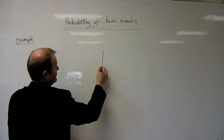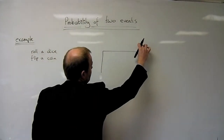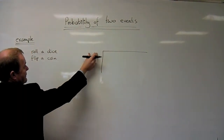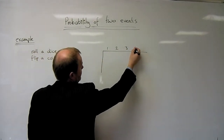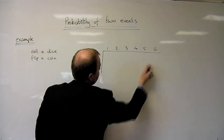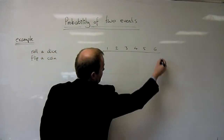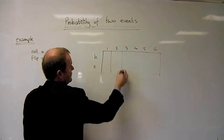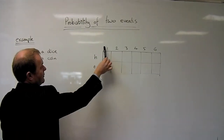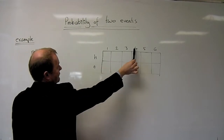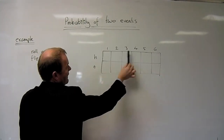With a grid, we put all the possible outcomes of one event along the top, and the possible outcomes of the other event down the side. Rolling a dice, I could roll a one, two, three, four, five, or six. Flipping a coin, I could get a head or a tail. By making the grid, you can see all the combinations: roll a one and flip a head, roll a one and flip a tail, roll a four and flip a head or a tail. There are twelve possible outcomes in total.